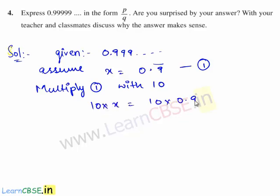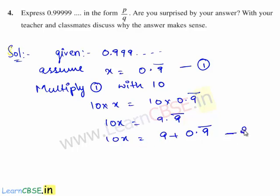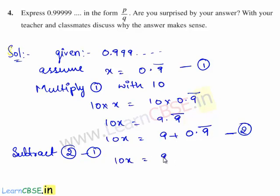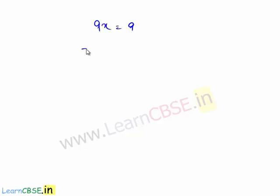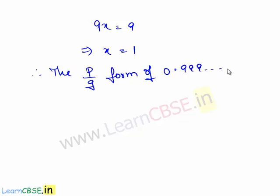So we have 10 times x is equal to 10 times 0.9 bar. This gives 10x is equal to 9.9 bar. This can be written as 10x is equal to 9 plus 0.9 bar. Consider this as equation 2. Now we subtract equation 1 from equation 2. So 10x minus x gives 9x, which is equal to 9. Therefore x is equal to 1. The p by q form of 0.999 and so on is 1. We can also say by observation that 0.999 and so on is approximately equal to 1, which is a rational number.